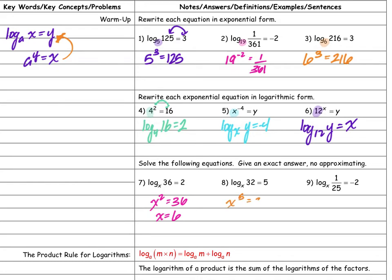This one gives x to the fifth power equals 32. What number to the fifth power equals 32? x equals 2. And the last one: x to the negative two equals one over 25. What number squared equals 25? That's 5, so x equals 5 — and indeed 5 to the negative two equals one over 25.